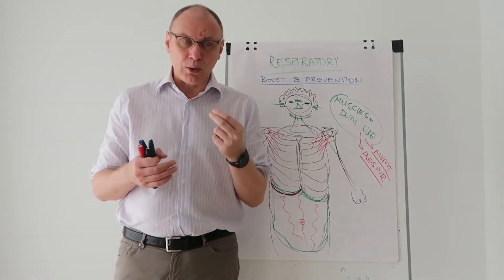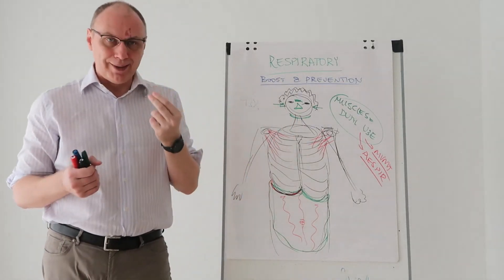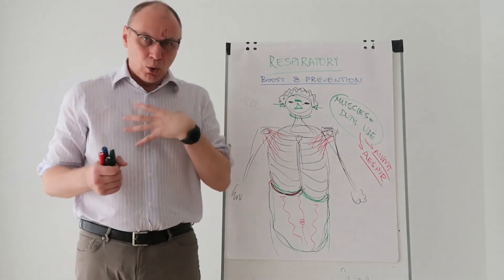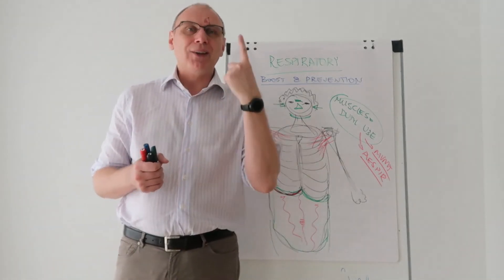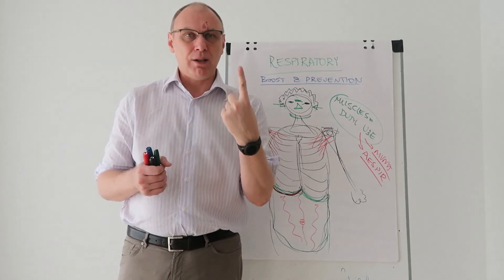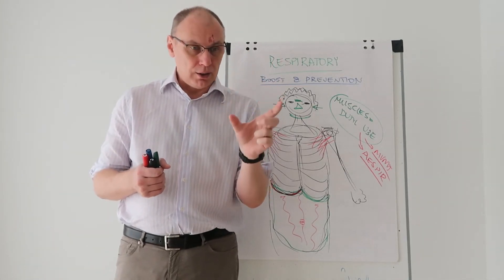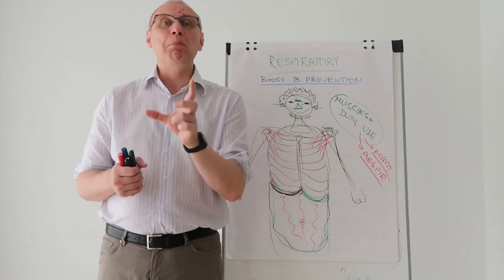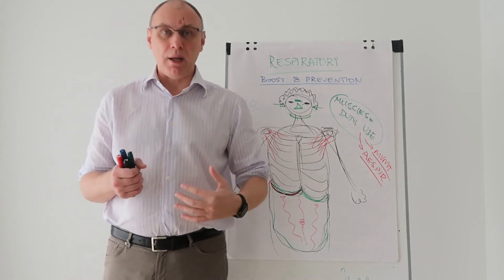But to impress you with the numbers, your lungs produce 30 liters—30,000 milliliters of mucous per day.